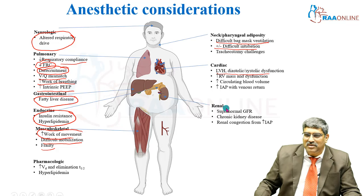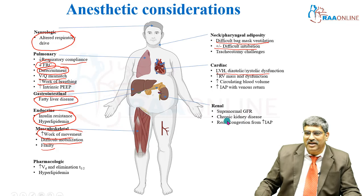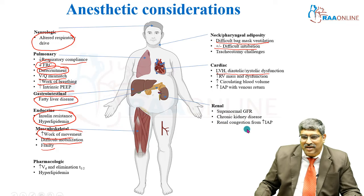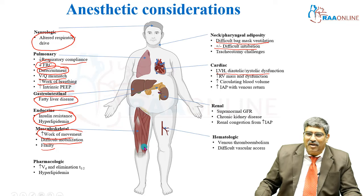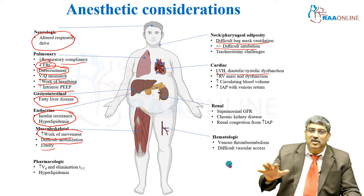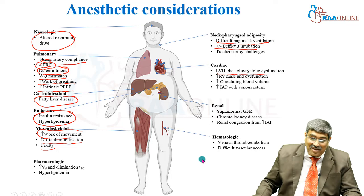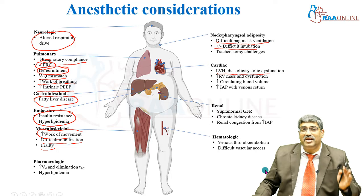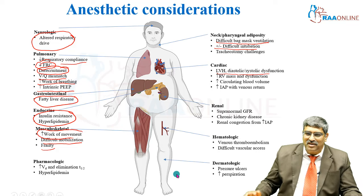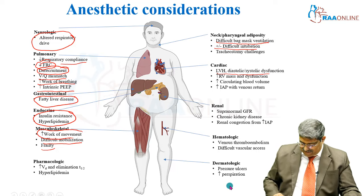Coming to the renal system, there is supranormal glomerular filtration rate, chronic kidney disease can happen, and there can be renal congestion. Hematologically, there is a chance of venous thromboembolism, and vascular access can be really very difficult. Dermatologically, there can be pressure ulcers and increased sweating.